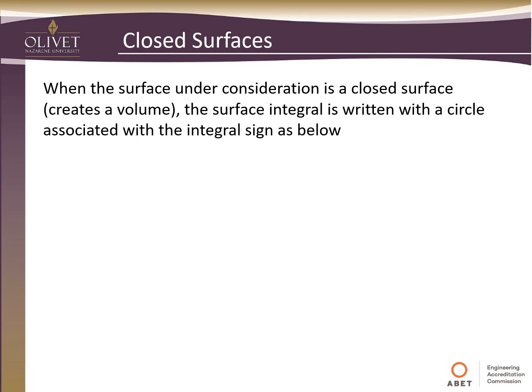So when the surface under consideration is a closed surface, that is, it creates a volume, all sides of a volume, the surface integral then is written with a circle associated with the integral sign just like this. So if you see this little circle with an S before we had the little circle with a C and that meant over a closed path, right? So now this little circle with an S means it's over a closed surface.